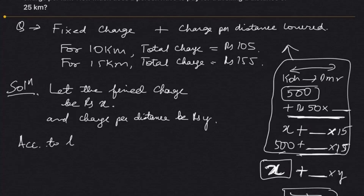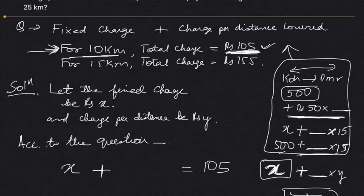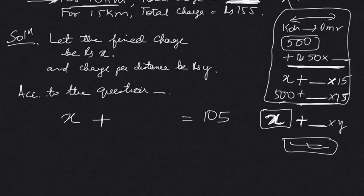According to the question, for 10 kilometers the total charge is Rs. 105. So the fixed charge x plus 10 kilometers into y equals 105. That is: x + 10y = 105. This is equation one.